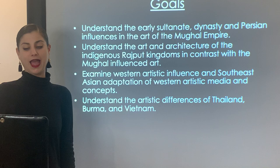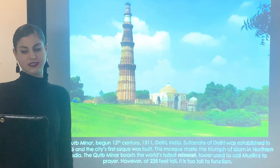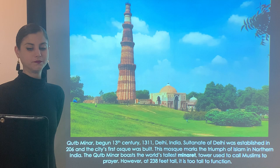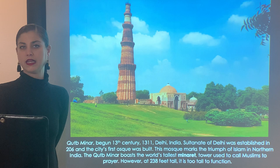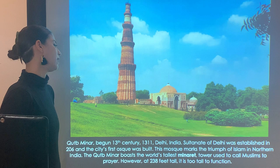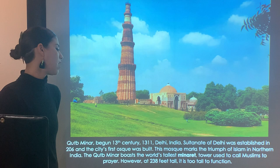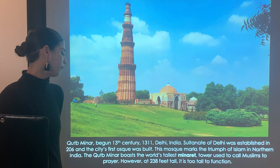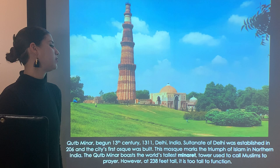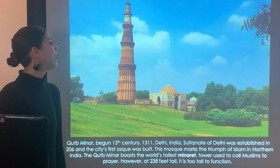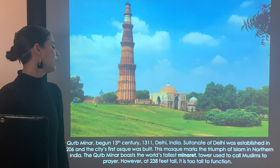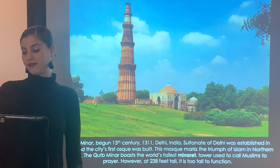This is the Kutub Minar, begun in the 13th century in Delhi. The Sultanate of Delhi was established in 1206 and the city's first mosque was built there — this mosque marks the triumph of Islam in northern India. The Kutub Minar boasts the world's tallest minaret; minarets are tall towers associated with a mosque used to call Muslims to prayer. At 238 feet tall, it's too tall to even function now.